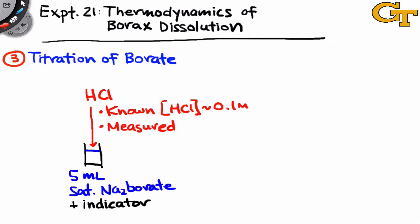At the end point, the indicator will change color since we'll have gone from a basic to an acidic solution, and all of the borate 2 minus anion will have been consumed by HCl.